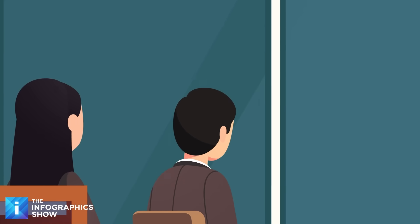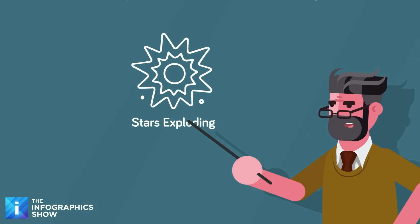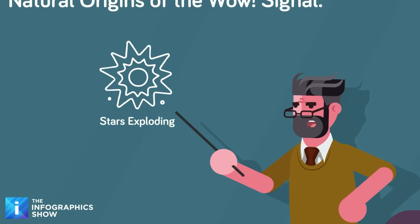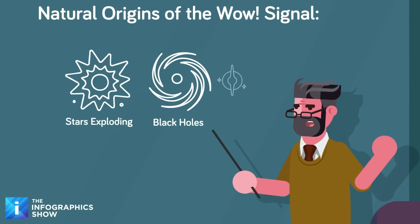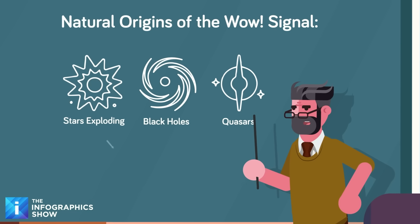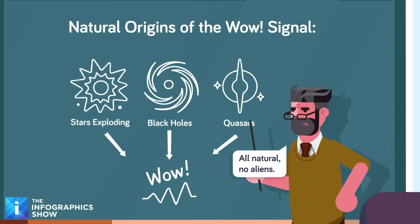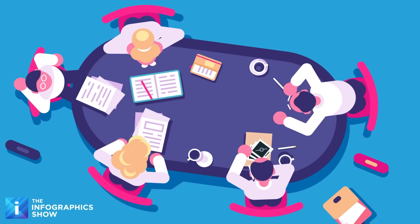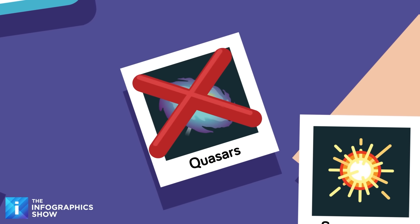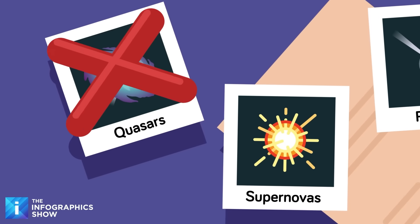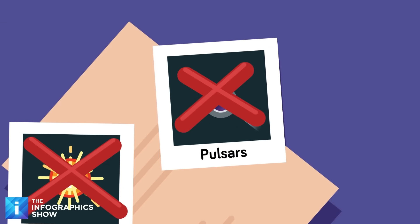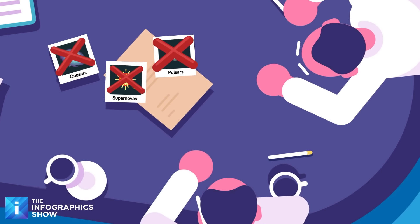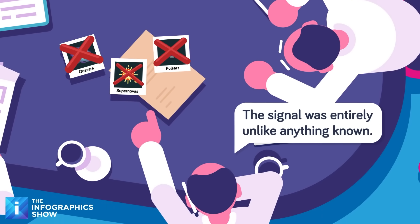The second theory involved natural cosmic phenomena. Space is spectacularly violent. Stars explode with the force of billions of atomic bombs every second. Black holes devour matter and spit out radiation. Quasars, supermassive black holes actively feeding, blast energy across billions of light-years. Surely one of those natural phenomena could explain the WOW signal. Astronomers lined up the usual suspects. Quasars could produce narrowband signals, but they are typically much broader and messier than what the Big Ear detected. Supernovas were too brief and too chaotic, and pulsars spin with clockwork precision, but they leave distinctly repetitive footprints that the Big Ear would have instantly recognized.